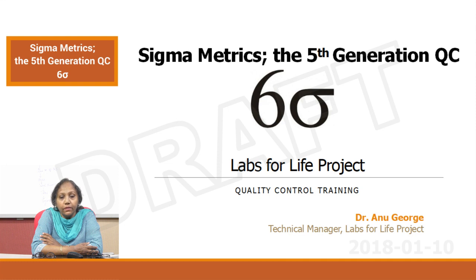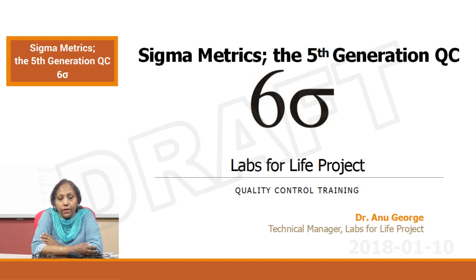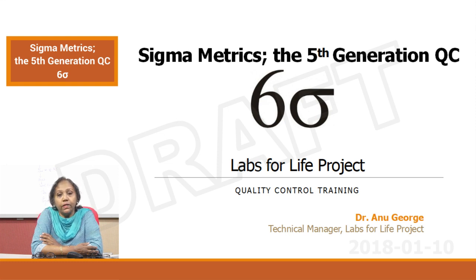Hello again. We have been discussing the protocols for quality controls and we have come a long way from where we started. We started off by talking about different kinds of distributions and the central tendencies, zeroing down on the Gaussian or normal distribution where the mean equals the mode equals the median. And then we talked about how the Gaussian can be employed to make an LJ chart for use in the laboratories.